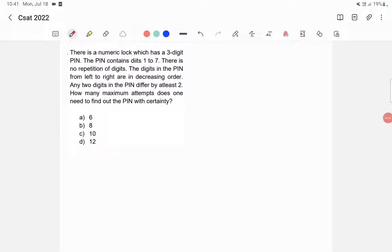There is a numeric lock which has a 3-digit PIN. The PIN contains digits 1 to 7. There is no repetition of the digits. The digits in the PIN from left to right are in decreasing order. Any 2 digits in the PIN differ by at least 2. How many maximum attempts does one need to find out the PIN with certainty? What we have to do here is find out the total number of possibilities first.